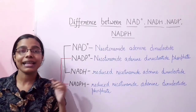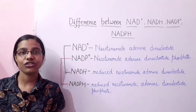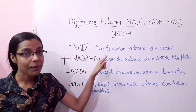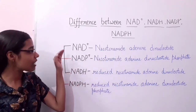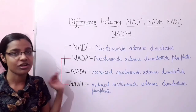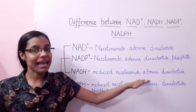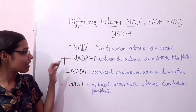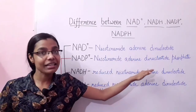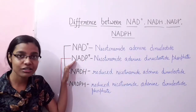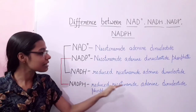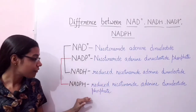These are basically the electron carriers that participate in oxidation-reduction reactions. NAD is nicotinamide adenine dinucleotide — the oxidized form — and its reduced form is NADH, which is reduced nicotinamide adenine dinucleotide. Similarly, NADP is nicotinamide adenine dinucleotide phosphate — the oxidized form — and its reduced form is NADPH, which is reduced nicotinamide adenine dinucleotide phosphate.